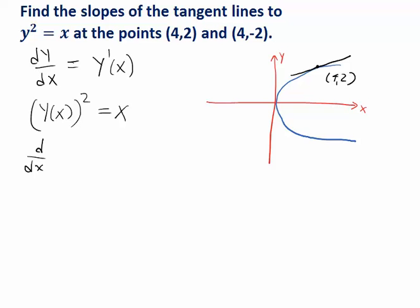So if I take the derivative of the left side, y of x quantity squared, that should be the same as the derivative of the right side, x. The right side is easy. d dx of x is just one.